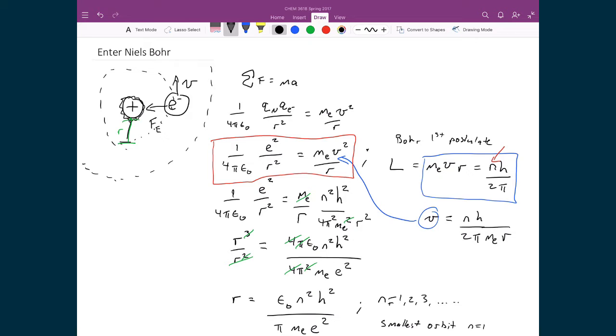And so we applied a very strictly classical mechanics type idea where we just balance the forces using Newton's second law, and then where Bohr came in was where he introduced these two postulates, where the first one was where he said the angular momentum of the electron in the orbit is quantized according to n h over 2π.